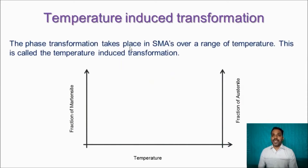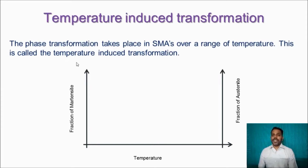Next is temperature-induced transformation. The phase transformation takes place in a shape memory alloy over a range of temperatures — it does not occur at a particular temperature but over a range. This is called temperature-induced transformation.